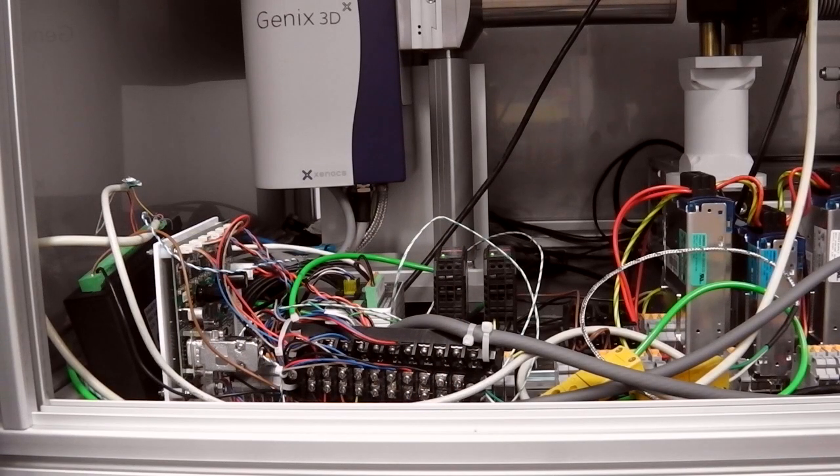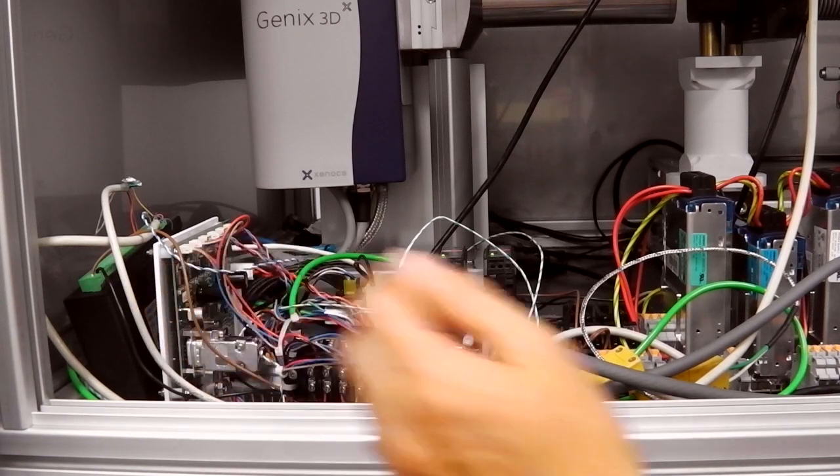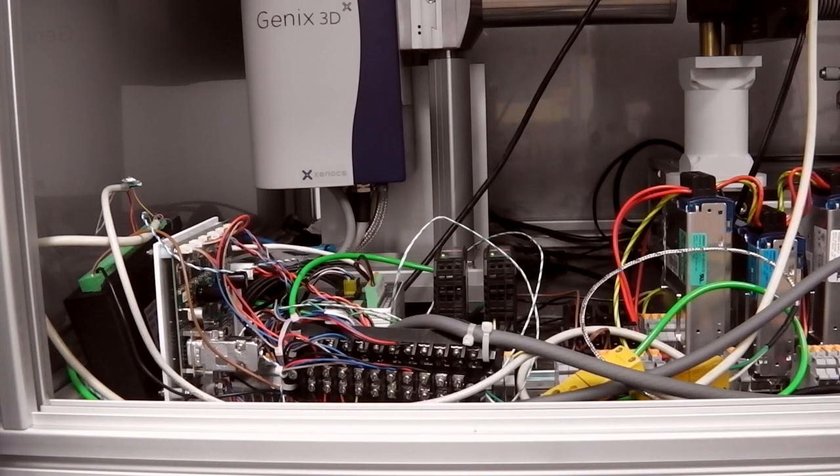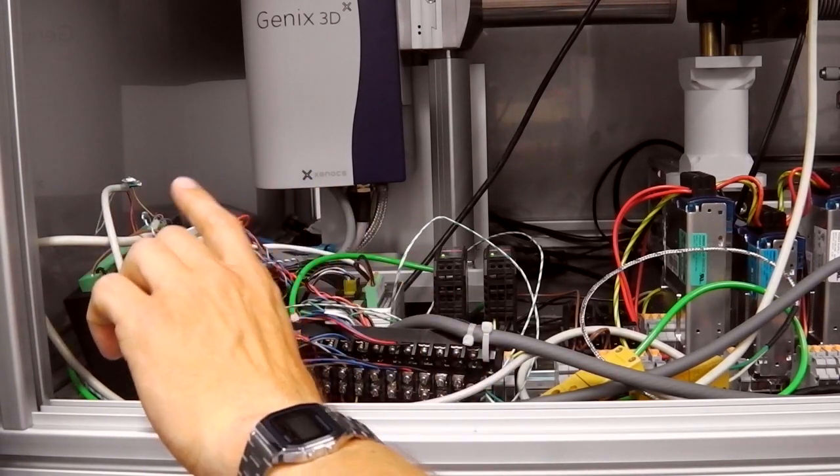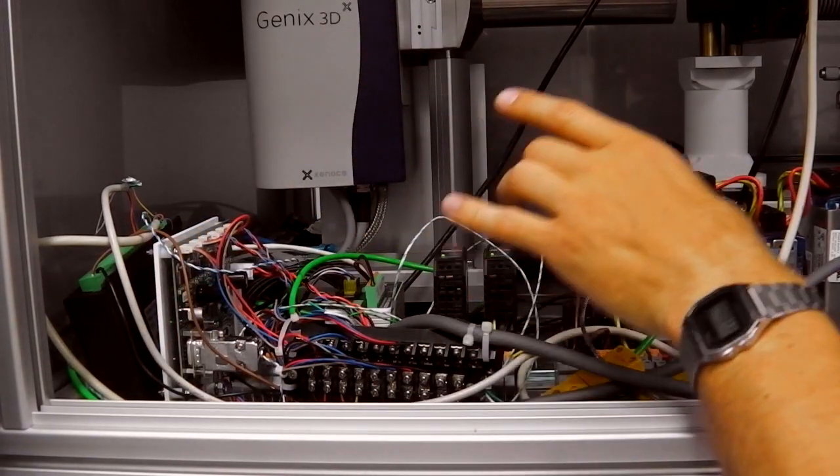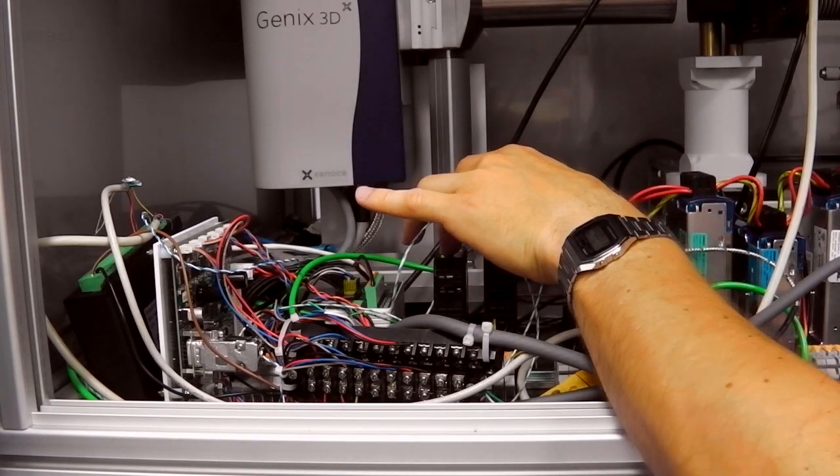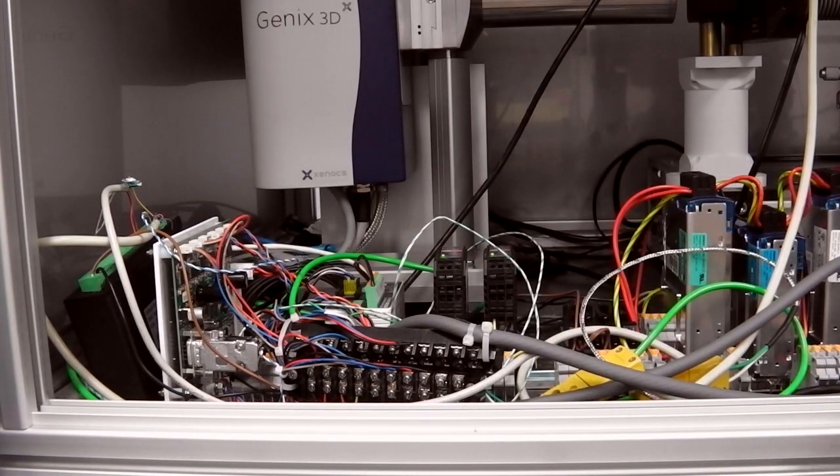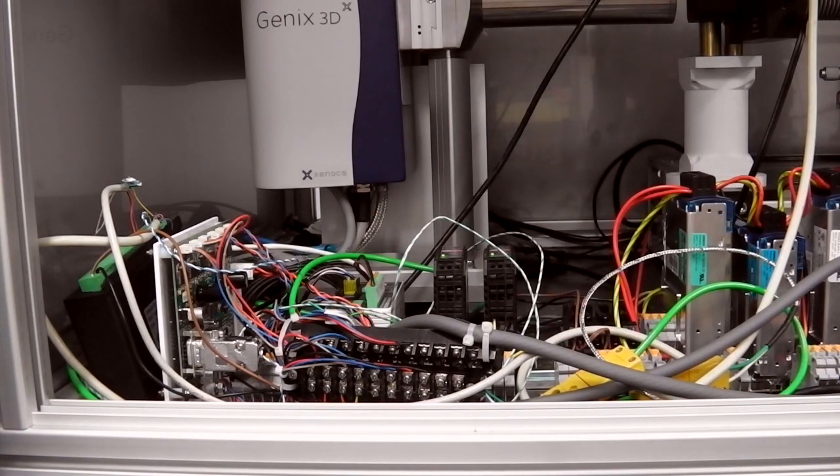Besides the detector electronics, we have a little bit more electronics over here. This is used to control the instrument. We have a motor controller, some power supplies, some solid-state relays, some temperature readouts, and a lot of wires to connect up all the motors to the various bits and pieces.